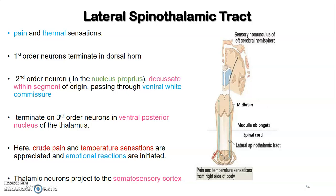The second-order neuron terminates on the third-order neuron in the ventral posterior nucleus of the thalamus, where crude pain and temperature sensations are appreciated and emotional reactions are initiated. The thalamic nuclei project to the primary somatosensory cortex. So: first-order neuron cell body is in the dorsal root ganglion, terminates at the dorsal horn; second-order neuron decussates via the anterior white commissure and ascends as the lateral spinothalamic tract to the ventral posterior nucleus of the thalamus.